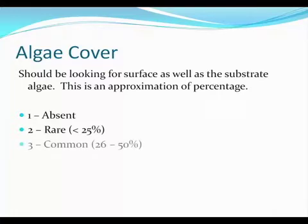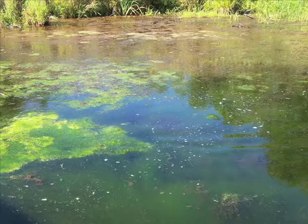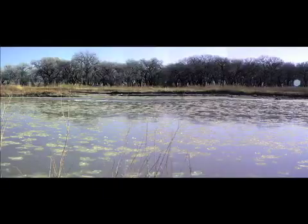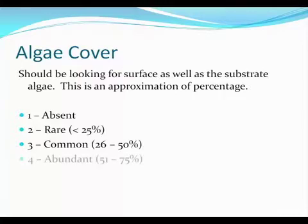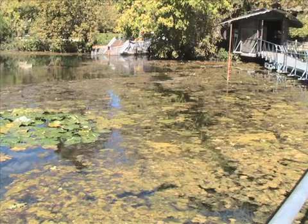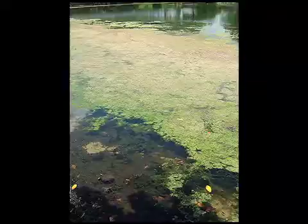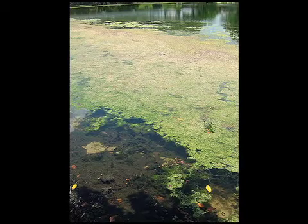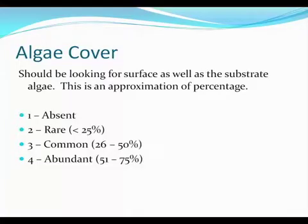Record a 3 if there are noticeable substrate or surface mats of algae with 26 to 50% coverage. Record a 4 if there is obvious algal cover that might be thick in some places with 51 to 75% coverage. Record a 5 if the site is choked with algae and almost the entire substrate or surface is covered.